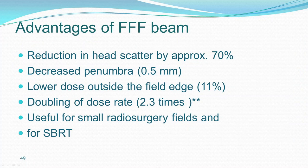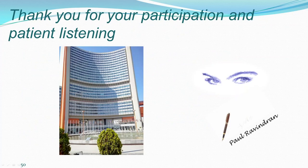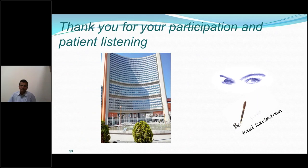The advantages of Triple F beam: reduction in head scatter of about 70%, decreased penumbra, lower dose outside the field edge, doubling of dose rate, and it is useful for small radiosurgery fields and SBRT. It can also be used for IMRS and IMRT. Thank you very much for your patient listening. If you have any doubts, I would be happy to share.